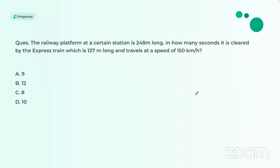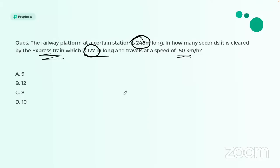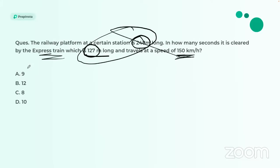For the railway platform question: the platform is 248 meters long and the train is 127 meters long and a speed is given. Simply convert km/h to m/s and divide the total distance by the given value to get the answer of approximately 9 seconds.